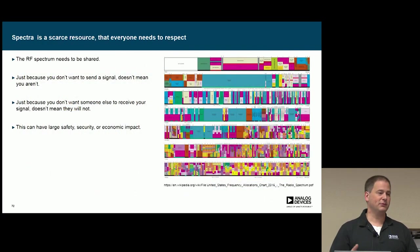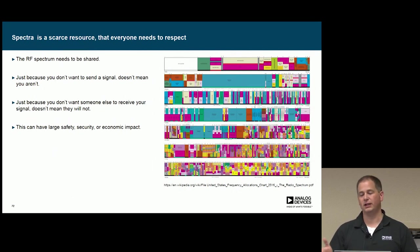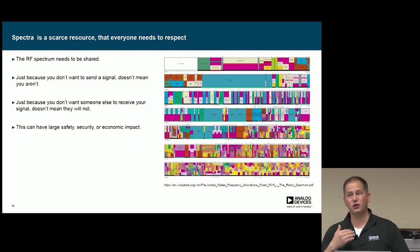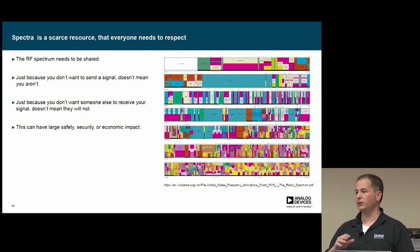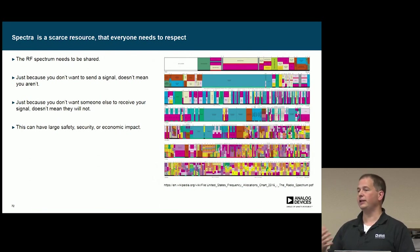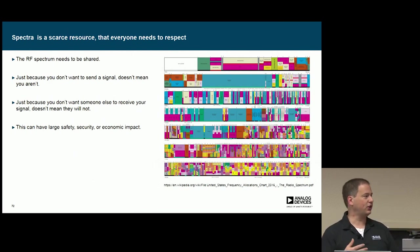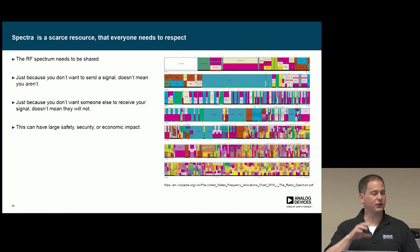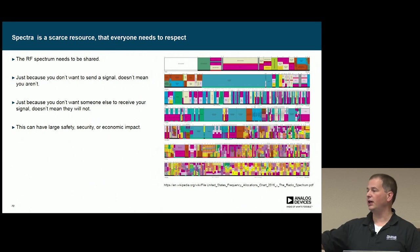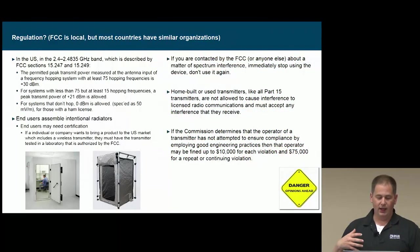But spectrum is a scarce resource that everybody needs to respect. Just because you have an amplifier capable of sending out plus 10 dB doesn't mean you should. Just because you don't want to send a signal to anyone doesn't mean you aren't. The RF spectrum is a shared resource that everybody shares. It's not like Ethernet where if you're not on my Ethernet cable, you don't access my media. Just because you don't want somebody to receive your signal doesn't mean they won't. This can have a large safety, security, economic impact. The third harmonic of your system may interfere with somebody's other system. And if that other system is PG&E's electrical maintenance system, that's a big problem.